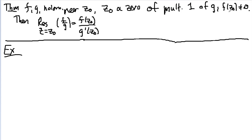Zero of multiplicity 1 at the bottom and not a zero at the top. So the first example is I'm going to calculate the residue at z equals 0 of 7 plus 2z over 5z plus 3z to the 9th.